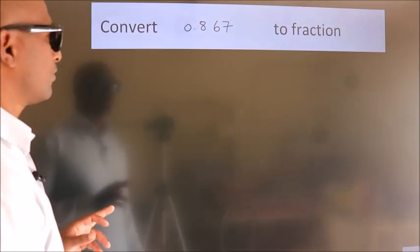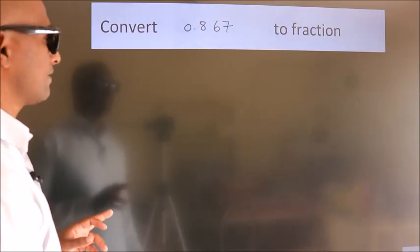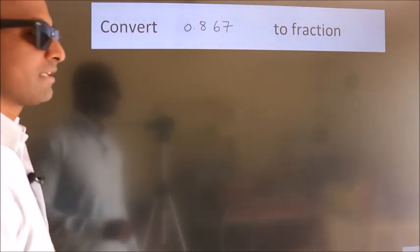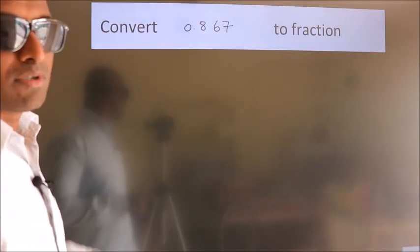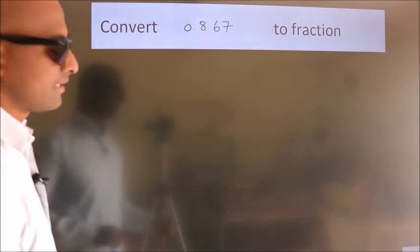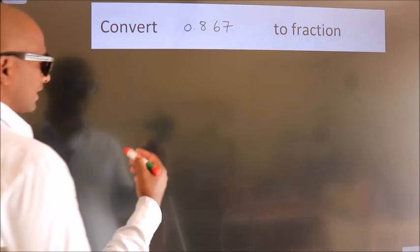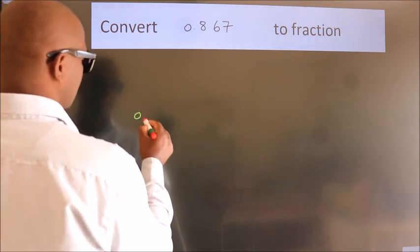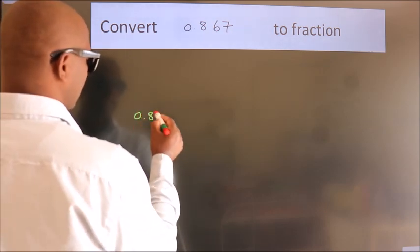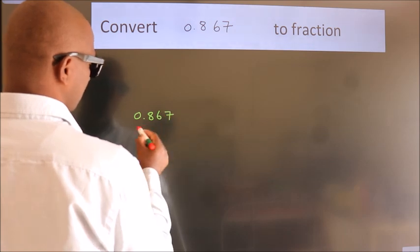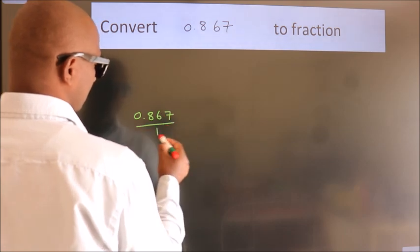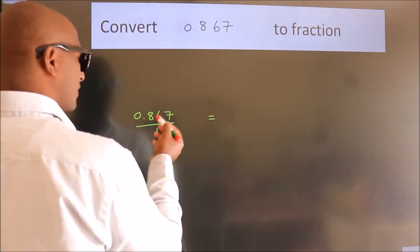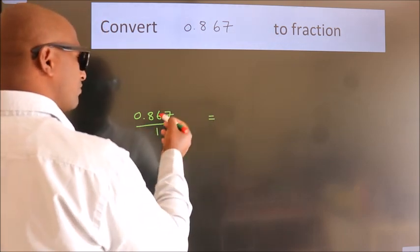Convert 0.867 to a fraction. Given is 0.867. To convert this to a fraction,